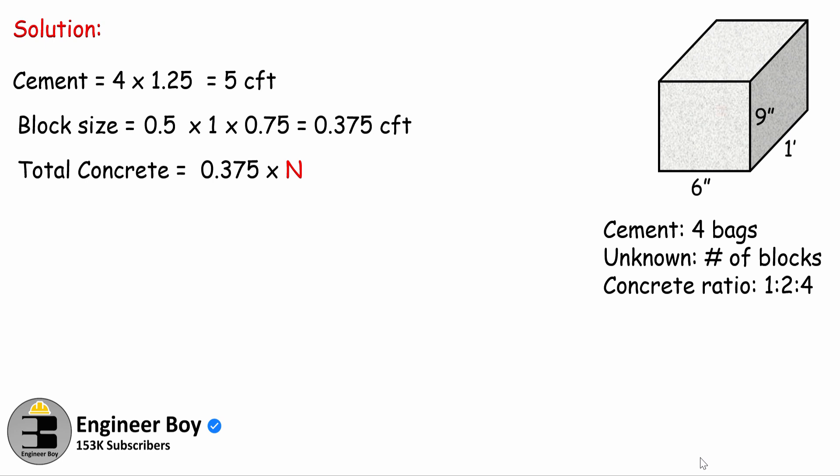And this is actually what I want, the N, the alphabet N that means the number of blocks. This is our approach. So we can say the total concrete is now 0.375N. Now let's focus on the given data. The only thing we know is the cement, and that is 5 CFT or four bags.